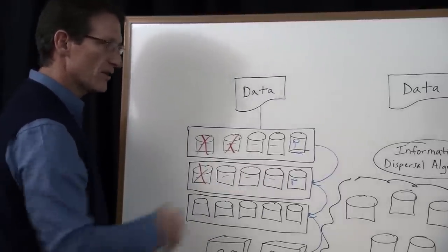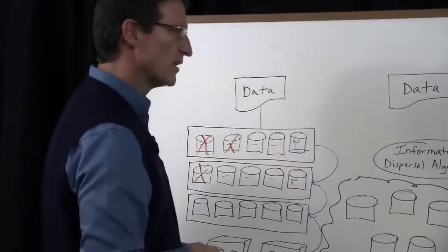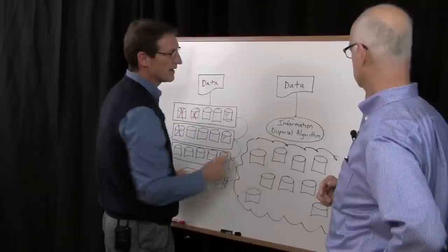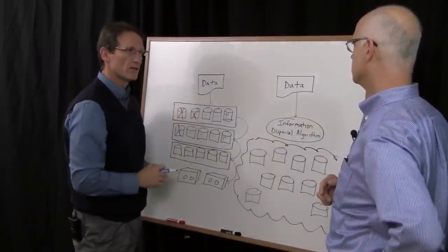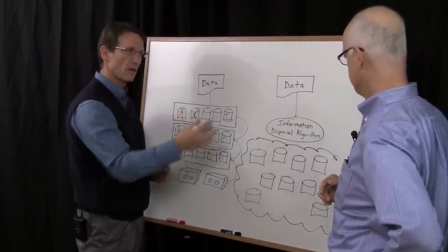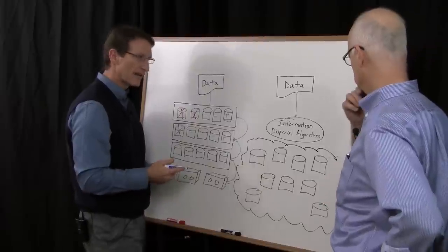So if we contrast that with information dispersal, in an information dispersal system, data comes into what's called an information dispersal algorithm. What that algorithm does is it essentially applies some mathematics to the data. It expands the data, it transforms the data.